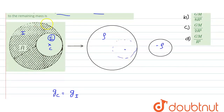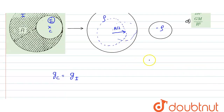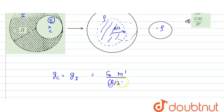To find the gravitational field due to the solid portion at the center of the hole, we draw a Gaussian sphere. The center of the cavity is at a distance of R/2 from the center of the full sphere, so this Gaussian surface is at a distance R/2. The gravitational field equals G times the enclosed mass M' divided by the distance squared, which is (R/2)² = R²/4.